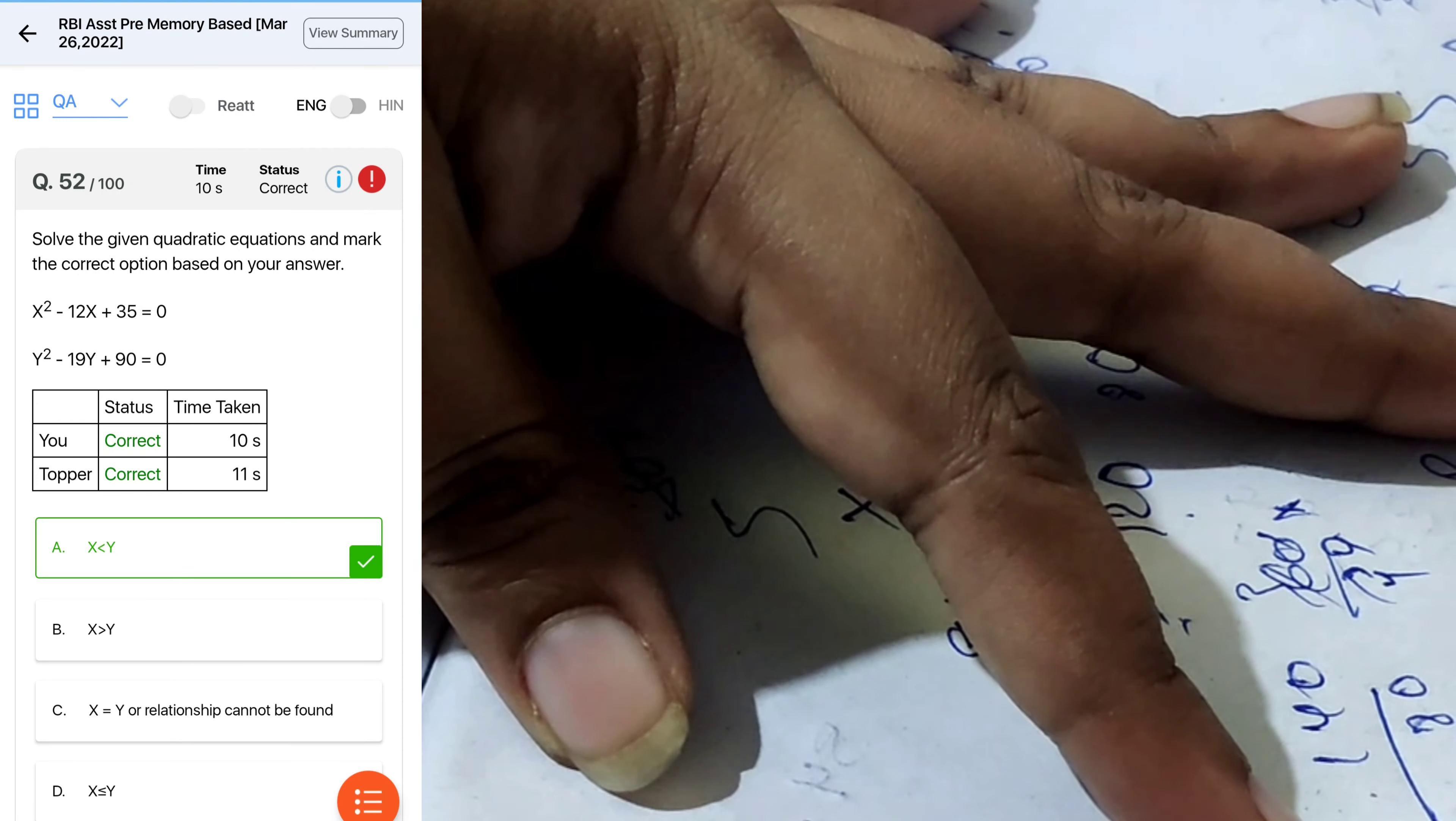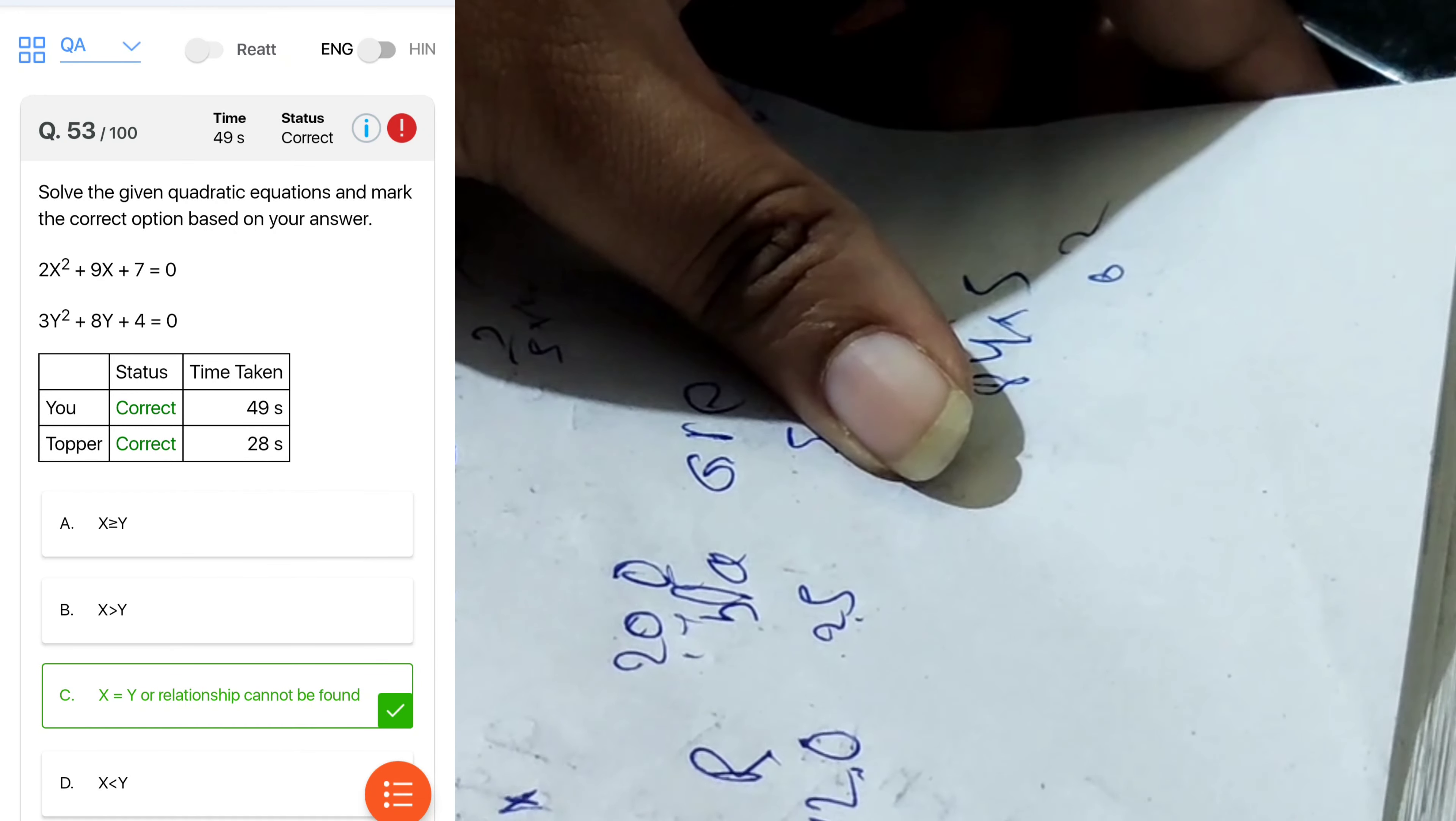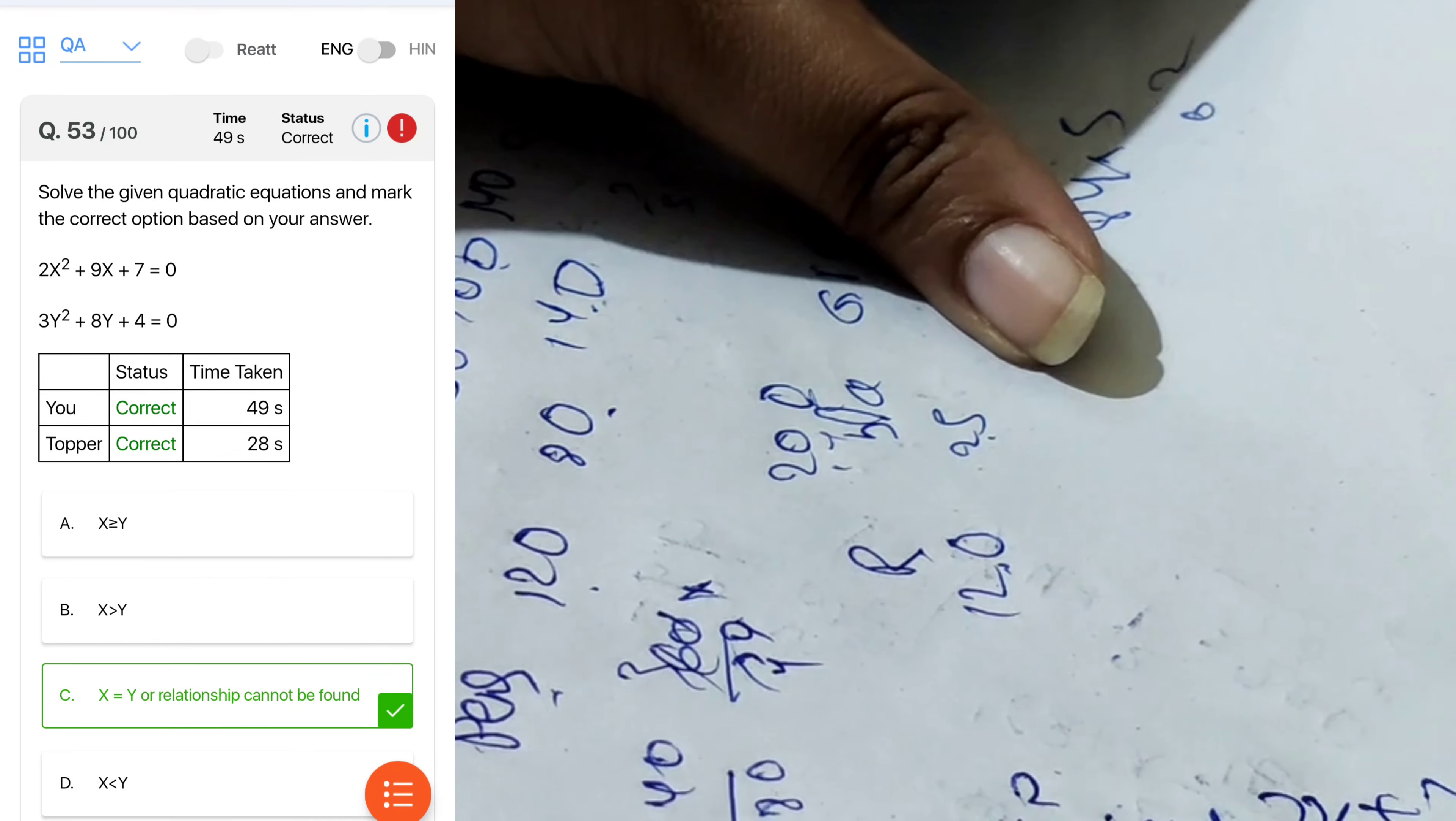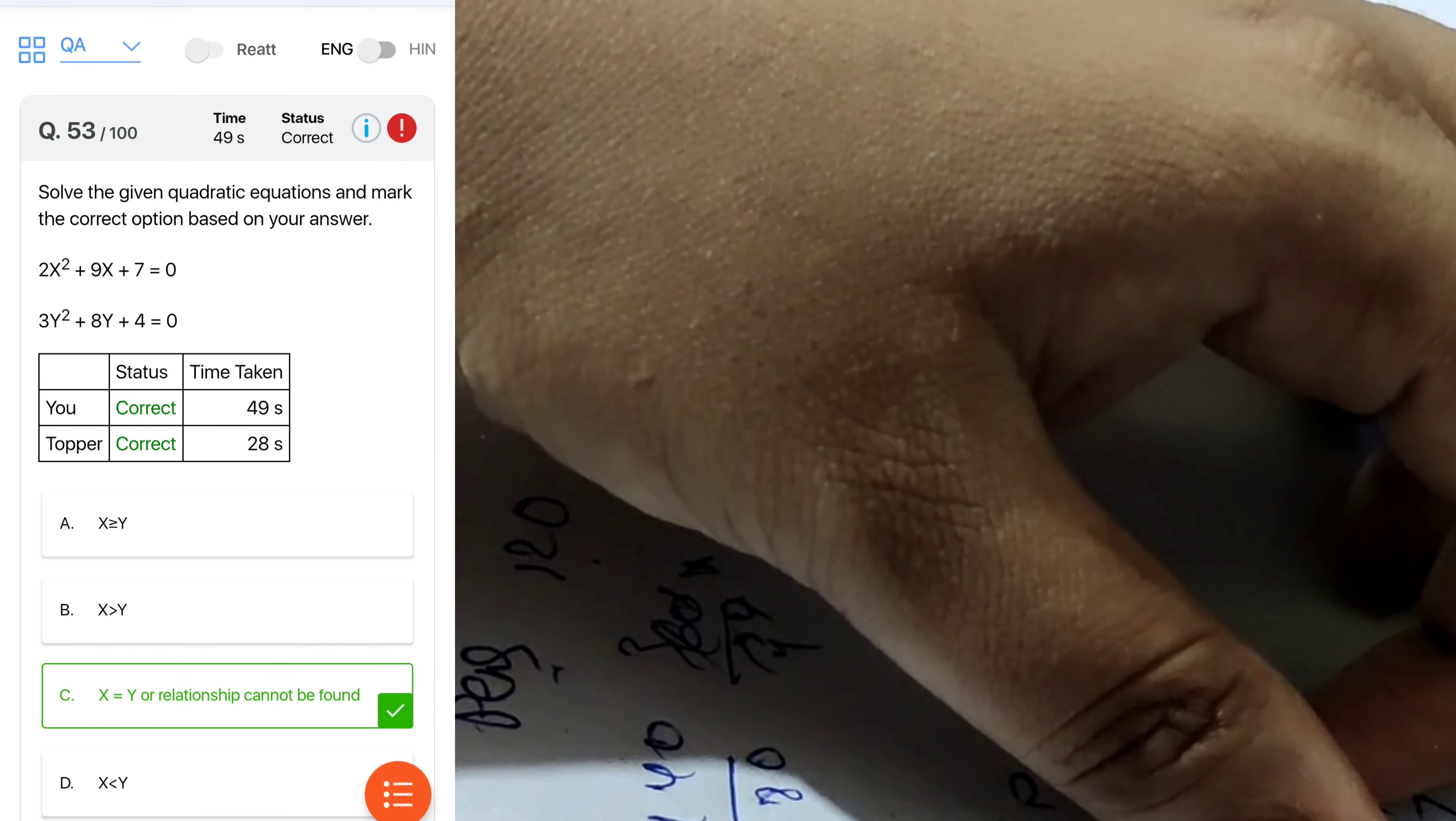As per 7, it's less and greater, so this is equal. So I think its relation can be determined. Next, x is 75109, so that in both cases x less than y, option. Next question, 2x squared plus 2x plus 7x plus 7. x is minus 1, minus 3.5. y equal to 3y squared plus 6y plus 2y plus 4y plus 2, plus 2, minus 2, minus 0.6.